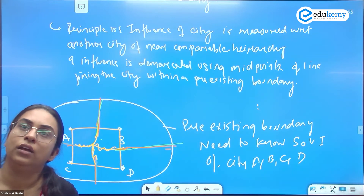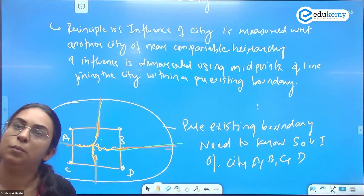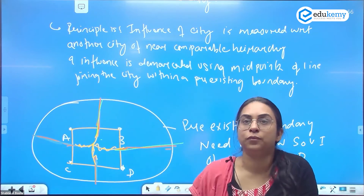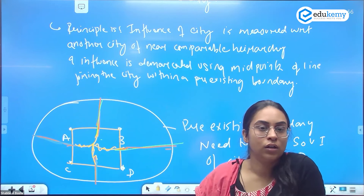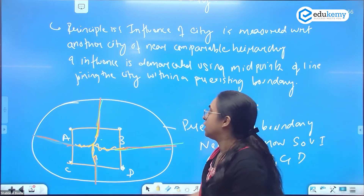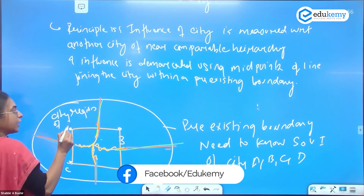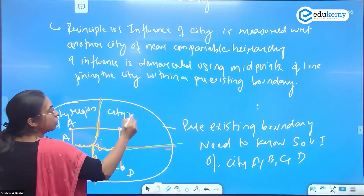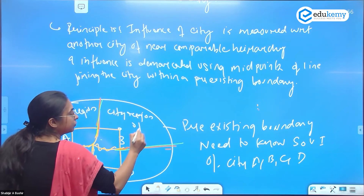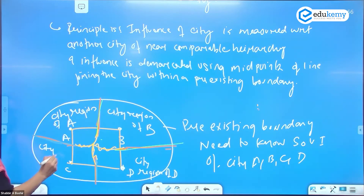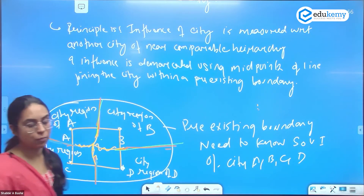Note that cities compared do not need to be geographically proximate — this method has been used to compare Delhi, Mumbai, Chennai, and Kolkata, which are not proximate to each other. The resulting regions are the Thiessen polygons: city region of A, city region of B, city region of C, and city region of D.